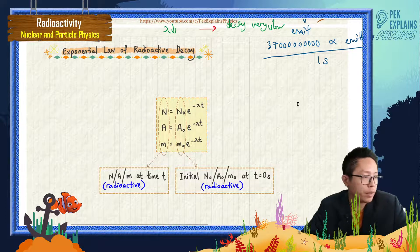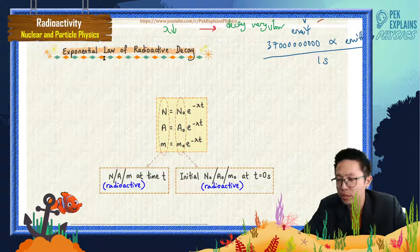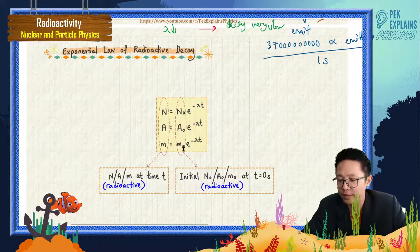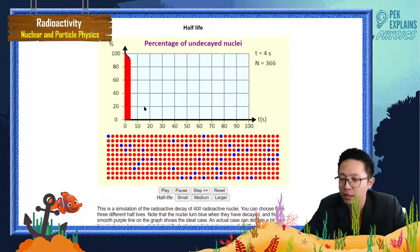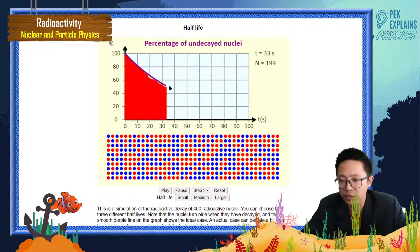Now I want to talk about the exponential law of radioactive decay. As you can see from this graph, for this radioactive decay, you can see the graph is an exponential graph. It decreases exponentially.